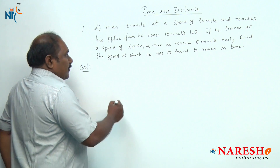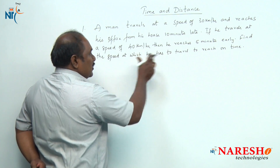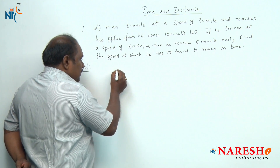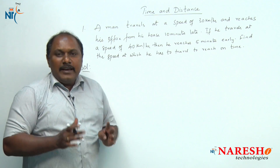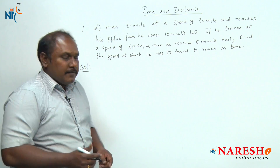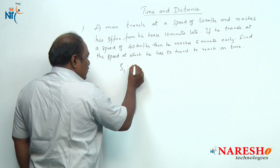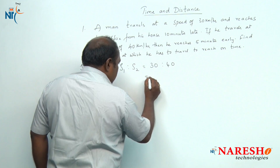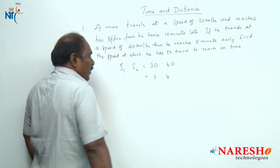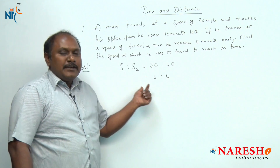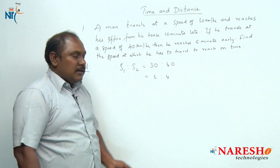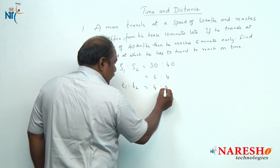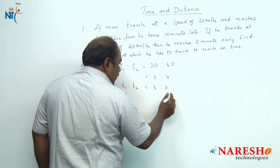In this particular problem, we know that distance is constant — he is travelling from his house to office. If distance is constant, speed and time are inversely proportional to each other. The speeds at which he is travelling are in the ratio of 30 to 40, which is 3 is to 4. If speeds are in the ratio of 3 is to 4 and distance is constant, then time should be in the ratio of 4 is to 3, and the difference in time is one part.